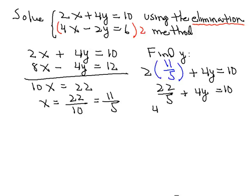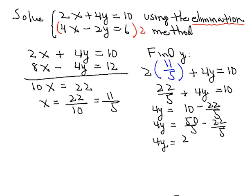And we'll subtract then the 22 fifths from each side. So we have 4y is equal to 10 minus 22 fifths. And we'll get a common denominator here, so this will end up being 50 over 5 minus 22 over 5, or 4y will be equal to 28 fifths.